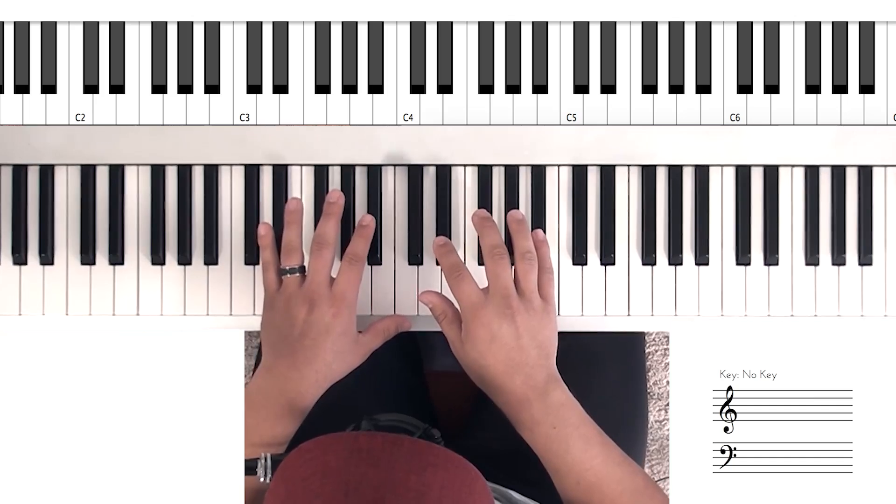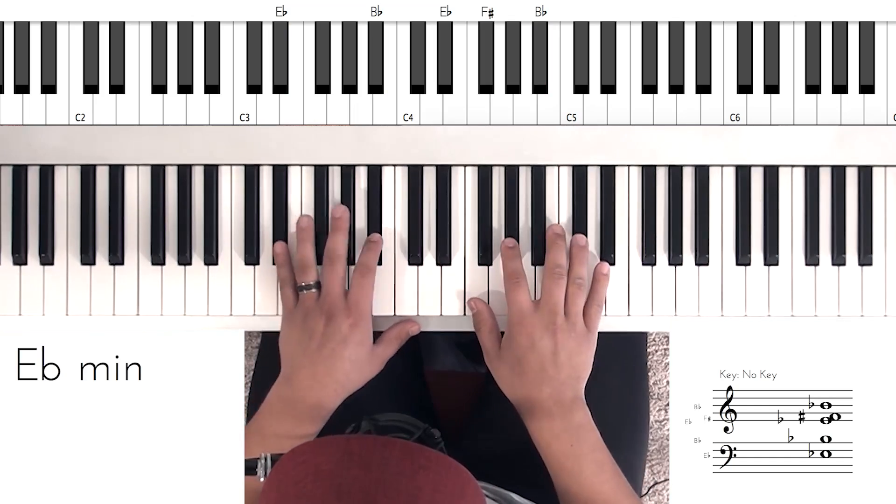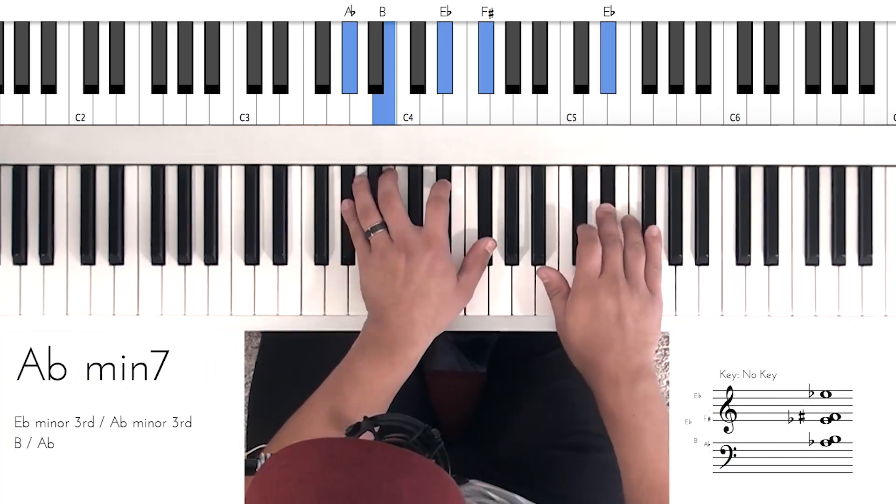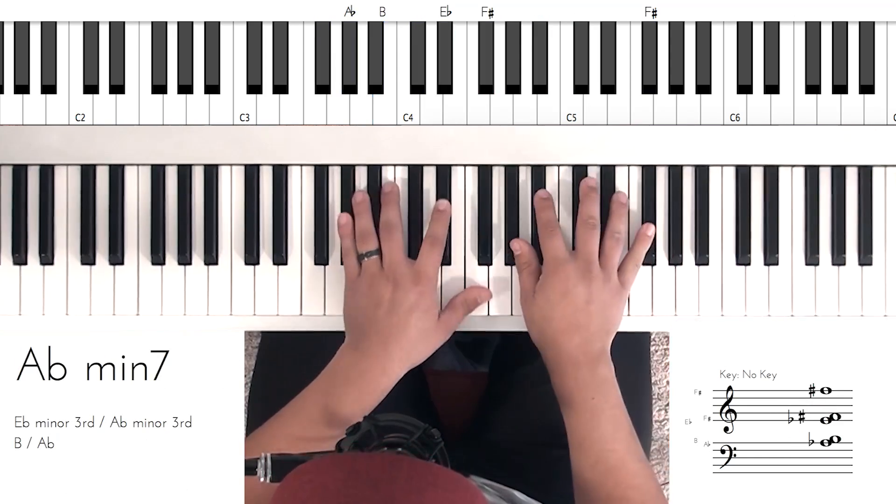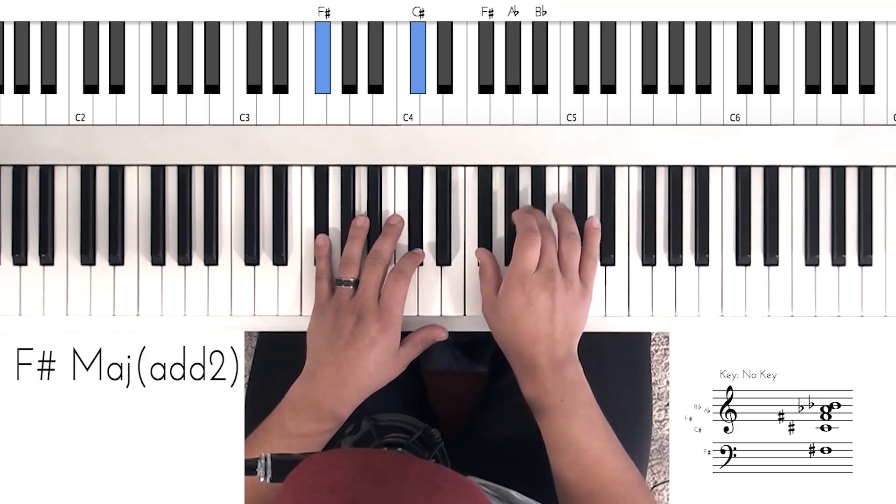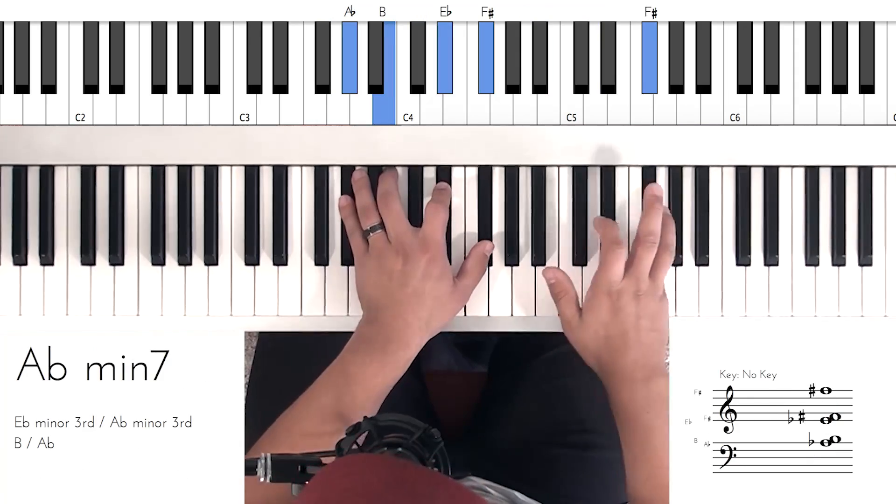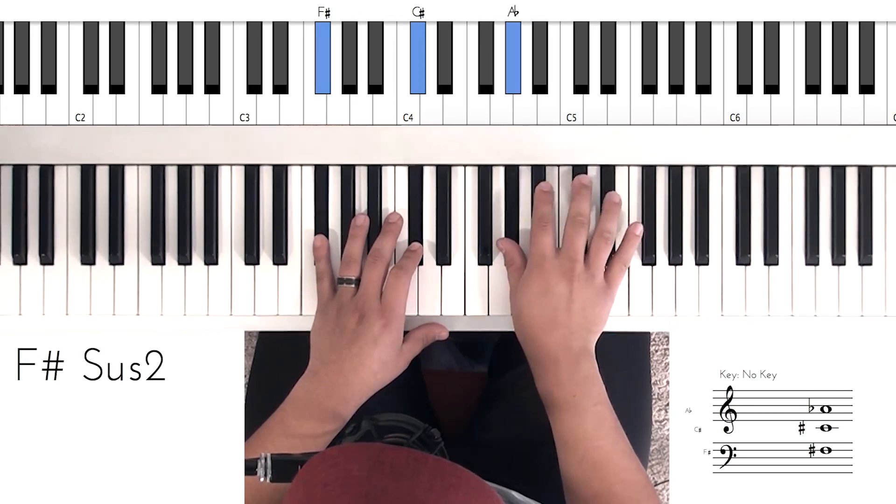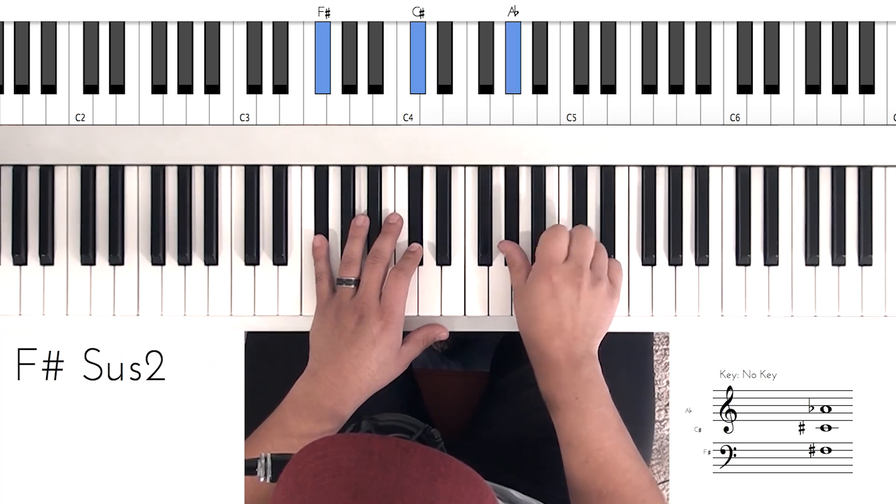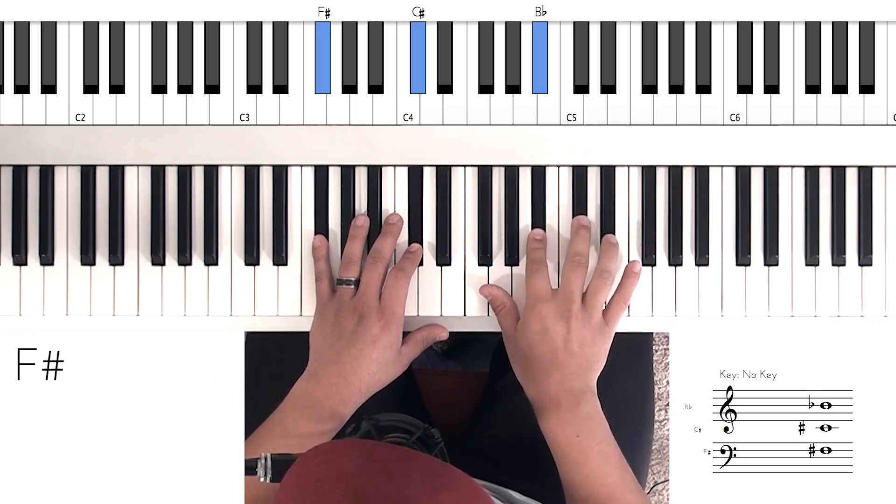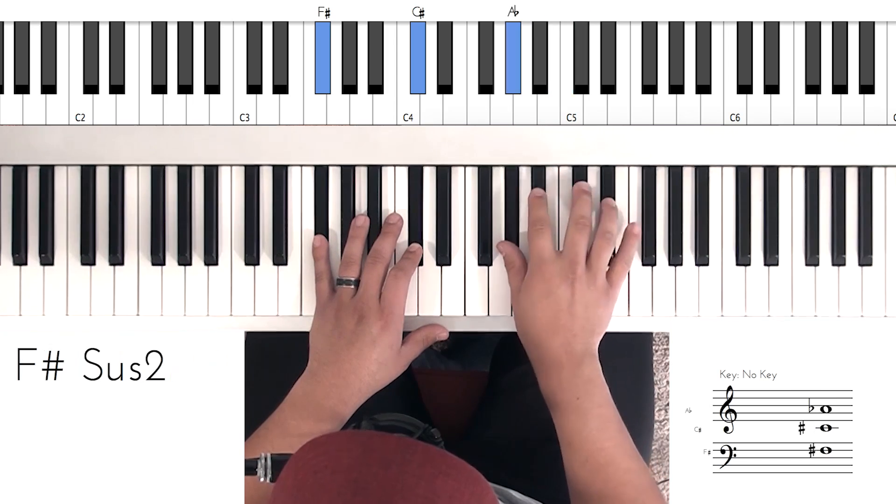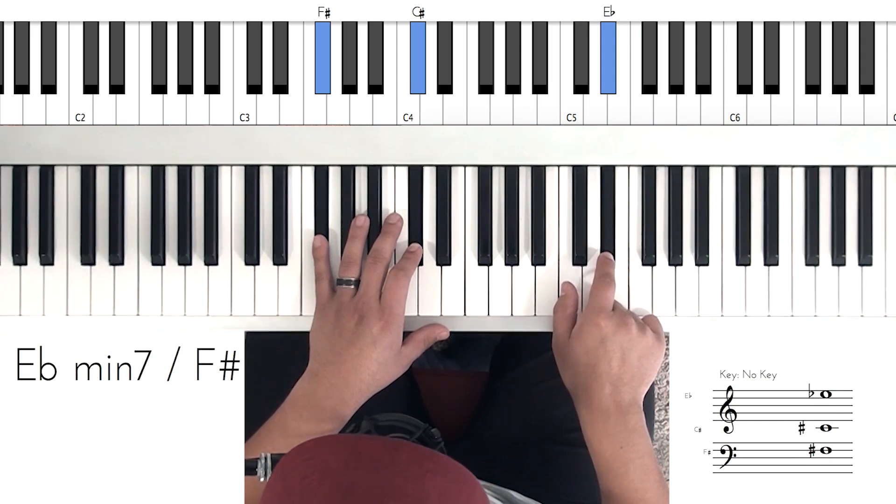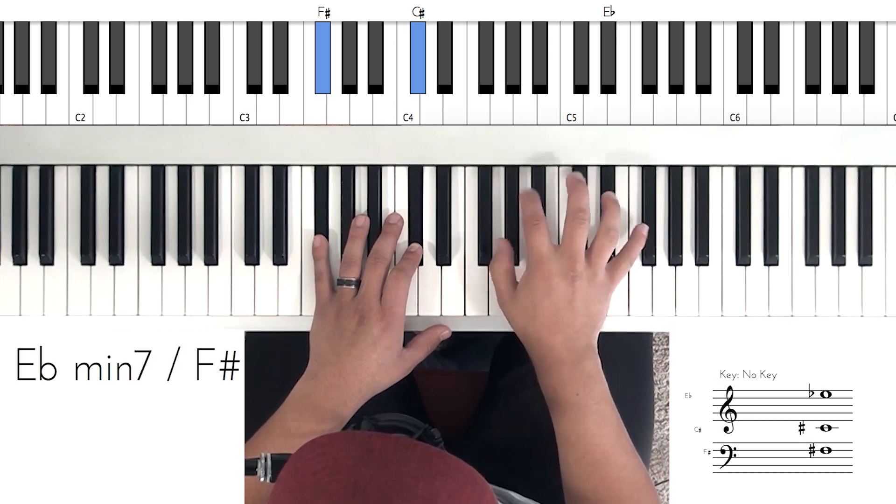So when you go to this F sharp major chord, you're going to do that. From the top, it's going to go very slowly. So this little lick here, you're going to go one, two, three, four. The right hand is hitting that. So you have your A flat, B flat, and then the C sharp. Then when you hit this E flat, your left hand is going to hit a chord.